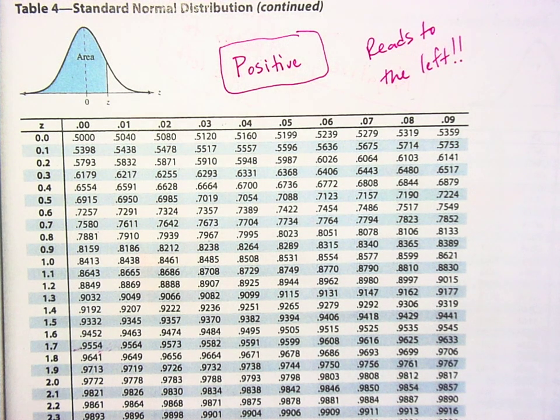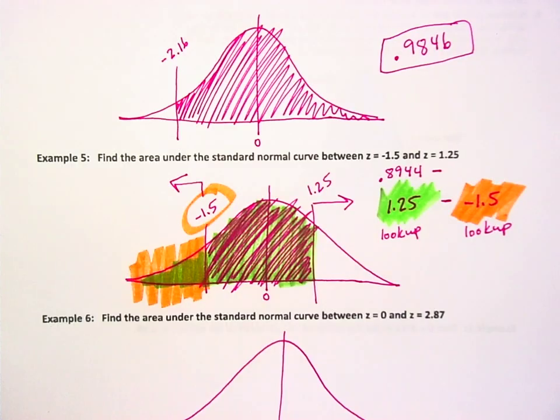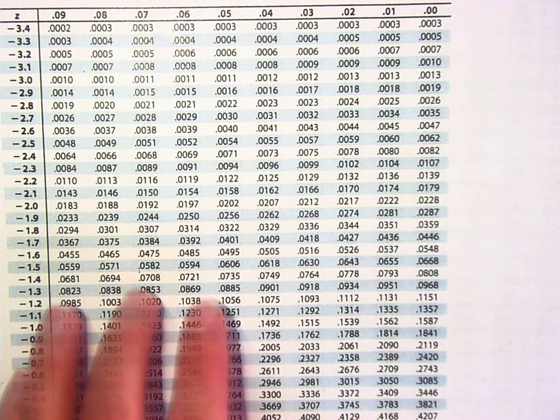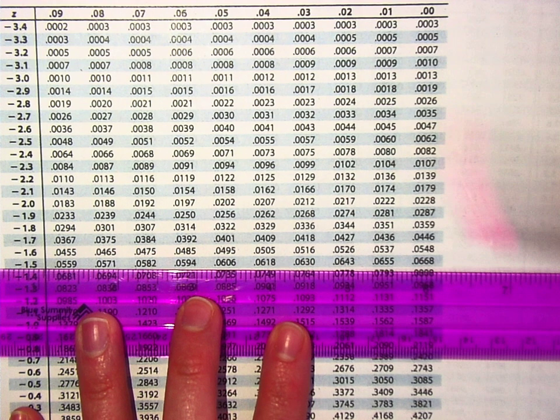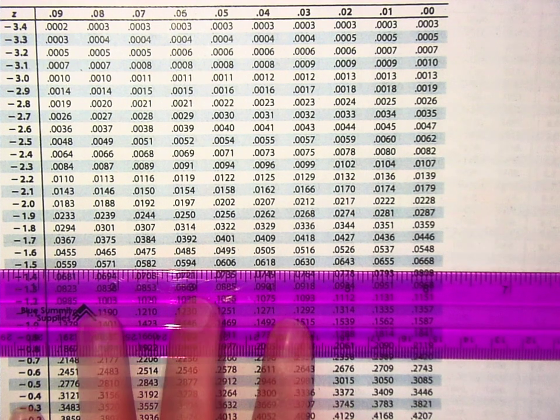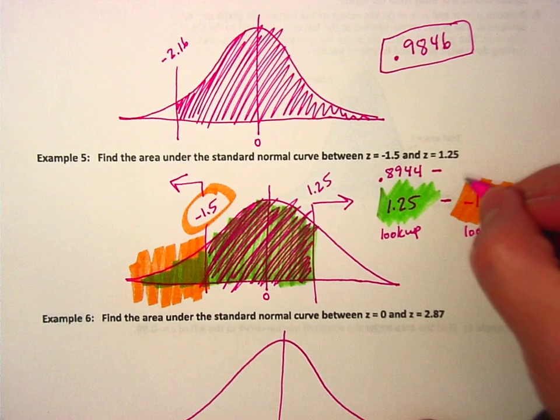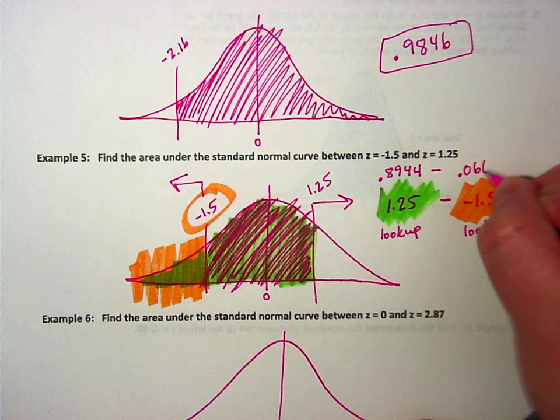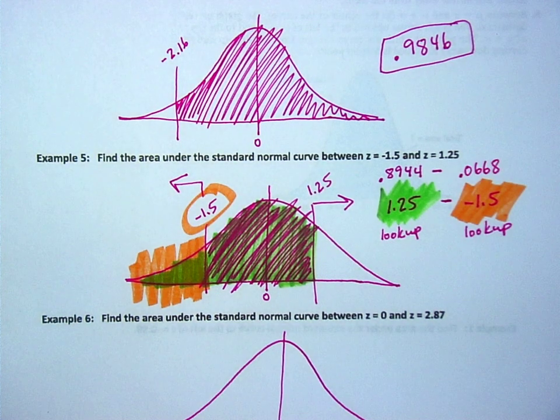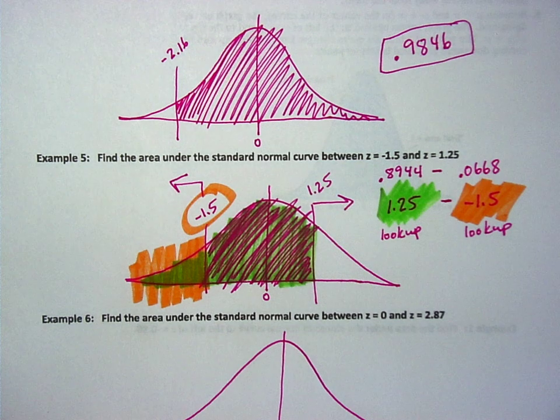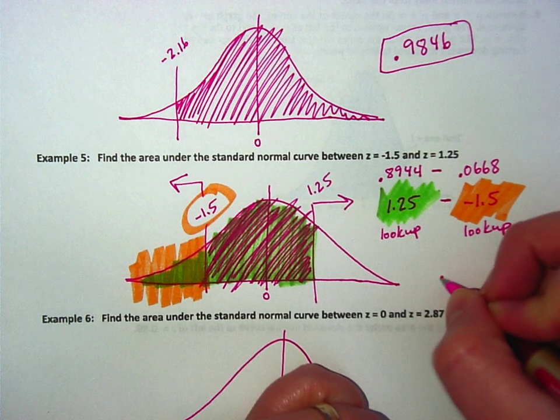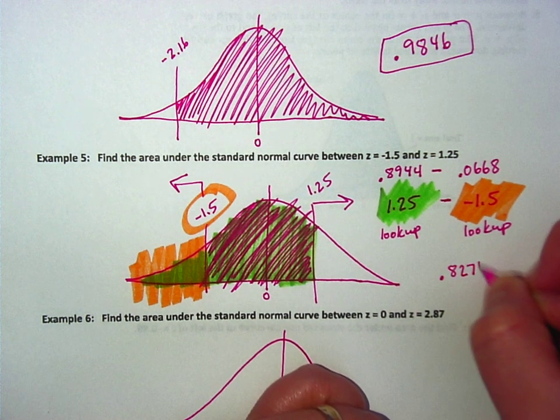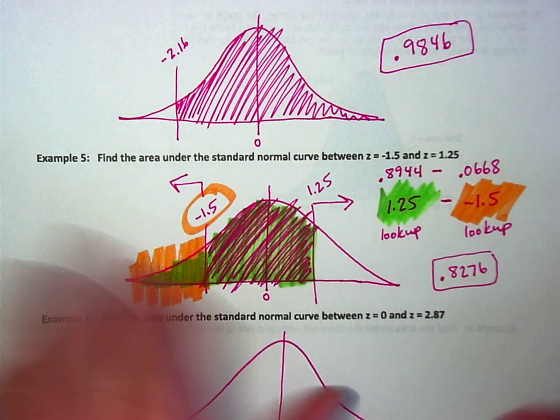So the 0.9s are right next to each other in the middle page, and so on. So you actually have to go all the way on this side. People get that wrong all the time. So negative 1.50 is 0.0668. I got 0.8276.